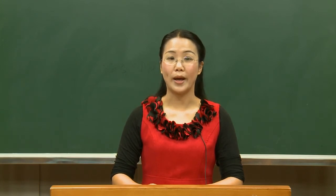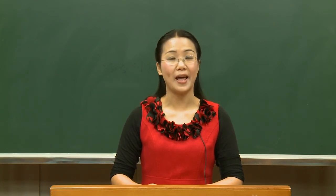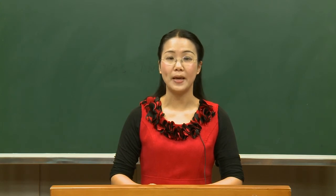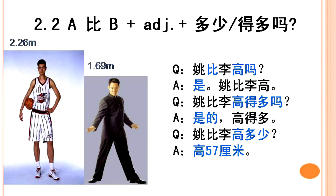In this way, we know how different A is from B. Look at the dialogue: 姚比李高吗? 是，姚比李高. 姚比李高得多吗? 是的，高得多. 姚比李高多少? 高五十七厘米.